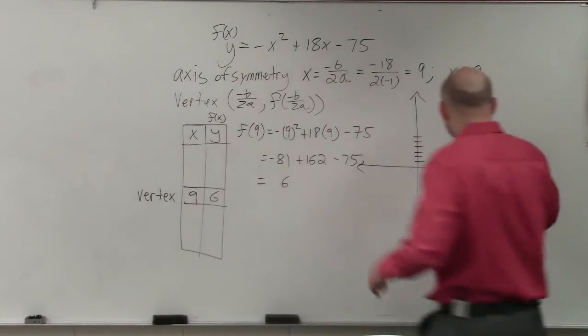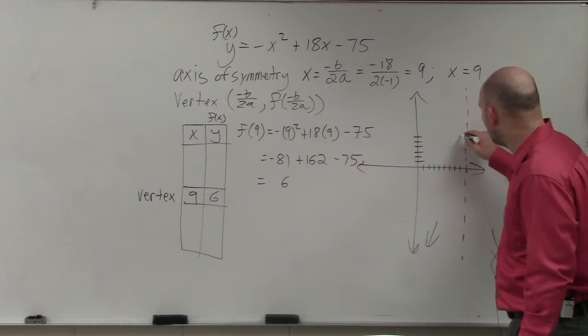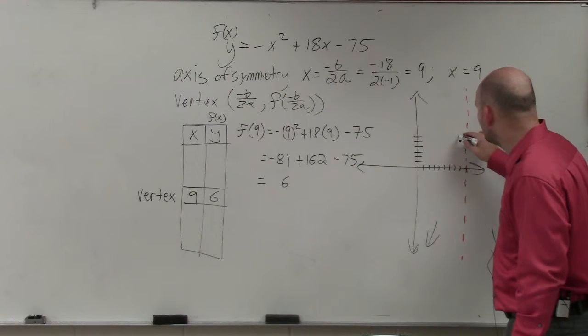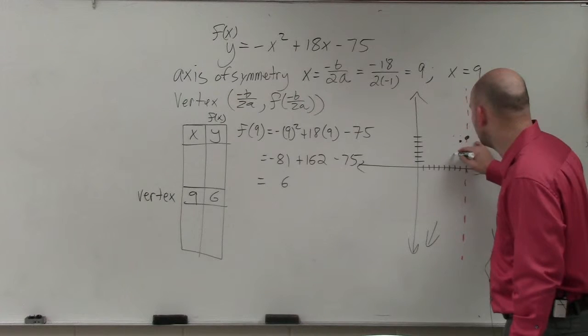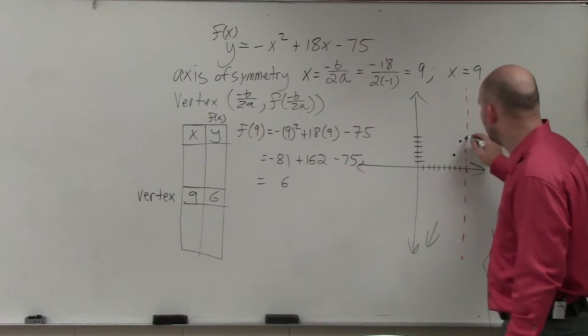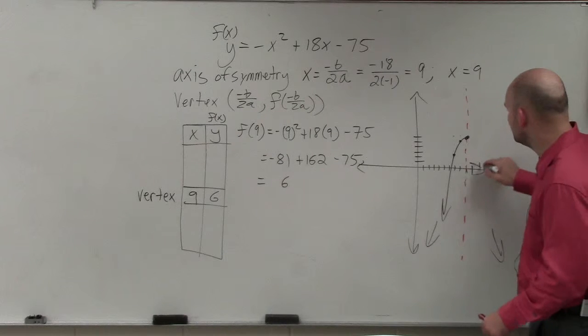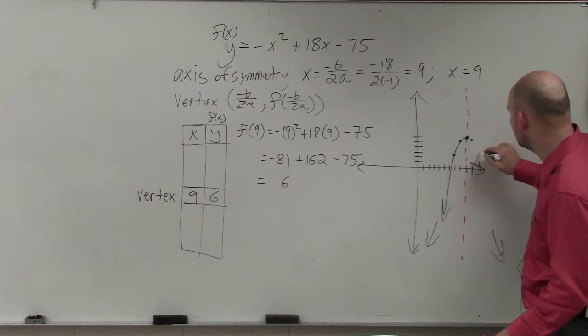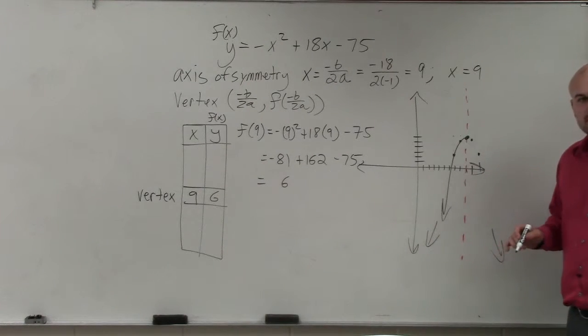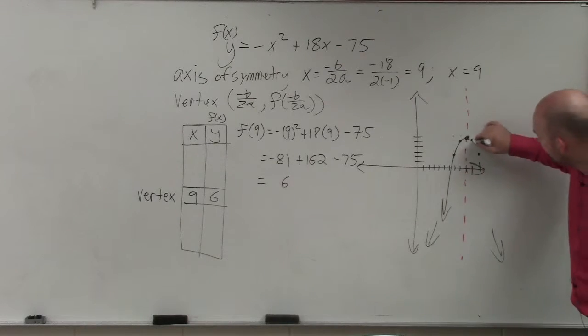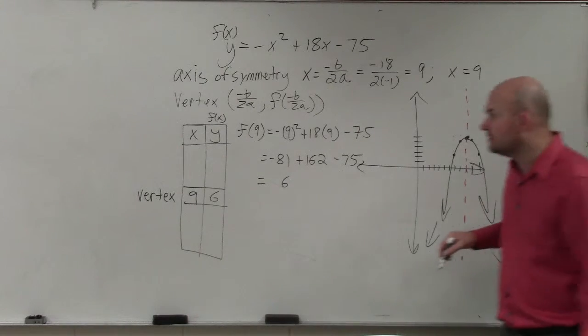So you could easily just do over 1, down 1. Over 2, down 4. 1, 2, 3, 4. And you could easily just graph it like that. Now, then all you do is reflect those points over, and you guys have your graph, right?